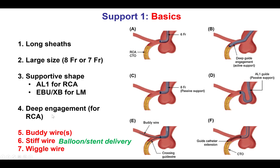Occasionally, one can engage the vessel deeply with the guide catheter. The classic example is the right coronary artery — by clocking the JR4 guide, it can dive in and provide very strong support. Other simple, low-cost ways to obtain support include using one or more buddy wires, and occasionally a stiff wire or the wiggle wire for delivering equipment.